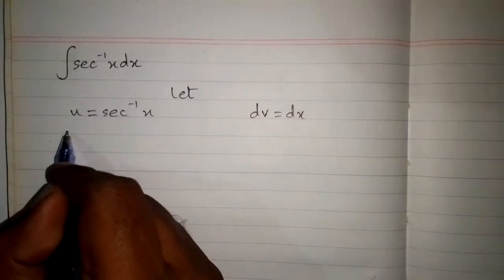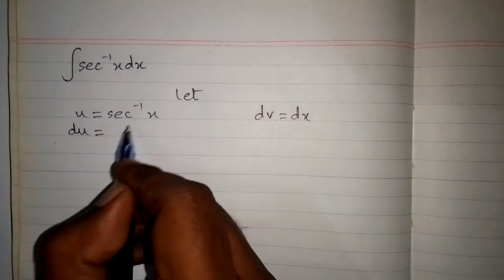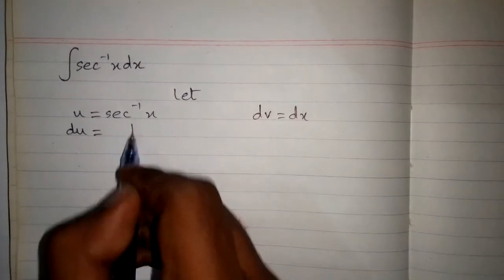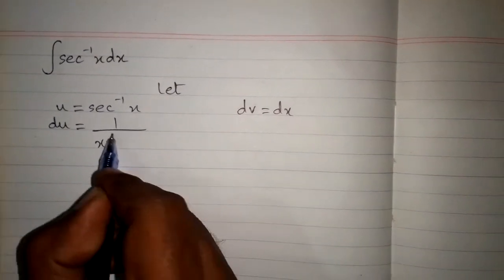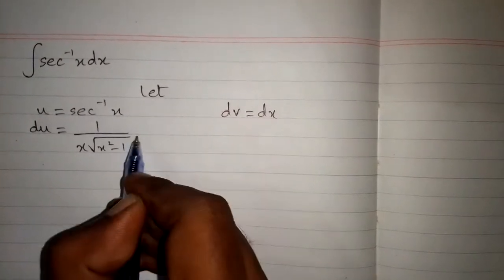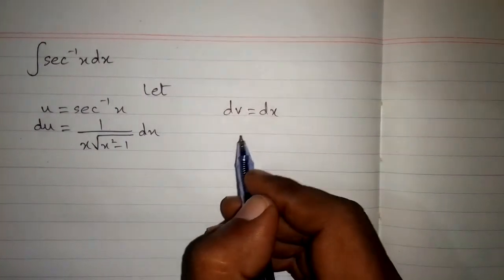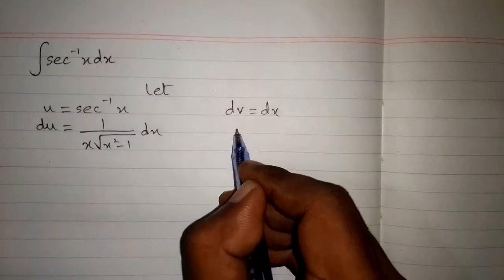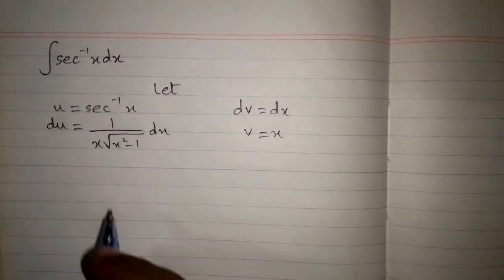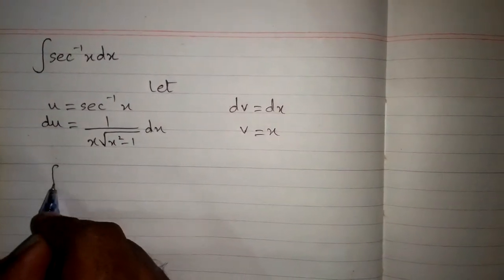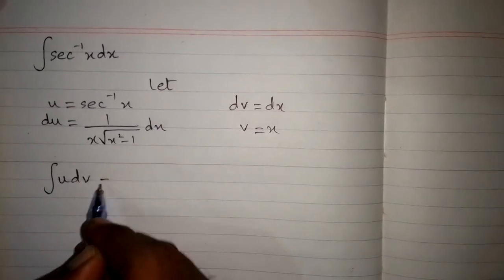Now the differential du is equal to the derivative of sec inverse x, which is 1 upon x times square root of x squared minus 1, dx. And here we will take the integral of both sides, so we have v is equal to x.